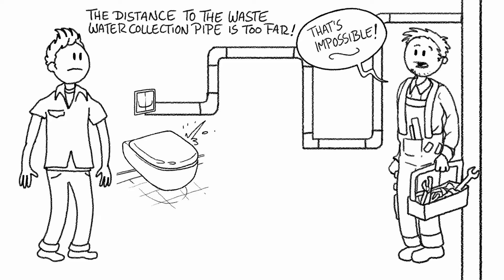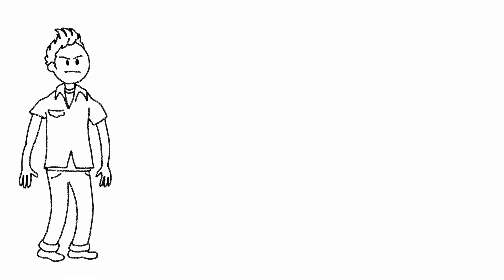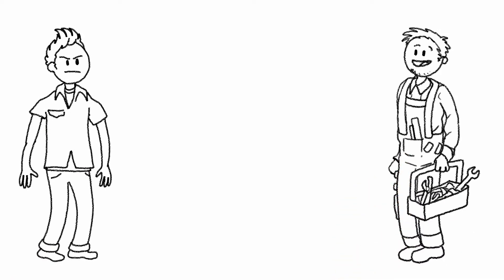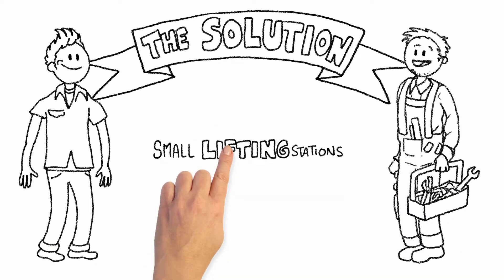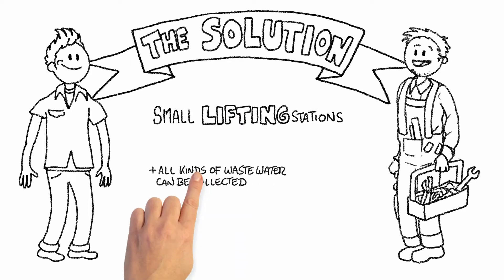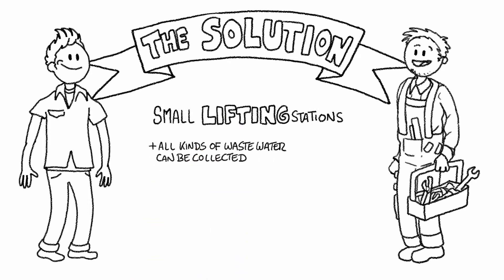Ken is frustrated, but the expert plumber has already found a solution for him. With a small lifting station for toilets, all kinds of wastewater can be collected and pumped via small pipes to the distant collection pipe with no problem at all. The piping can be installed without regard to the incline.